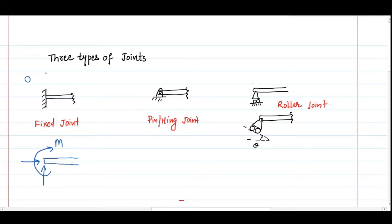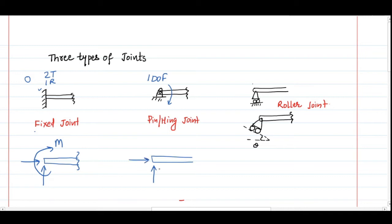For a fixed joint, the degree of freedom becomes zero because it constrains two translational and one rotational motion. When removing the fixed joint, you put back all three forces. For a pin joint, rotational motion is allowed — two degrees of freedom are constrained — so when making the free body diagram, you apply only two forces: no moment.